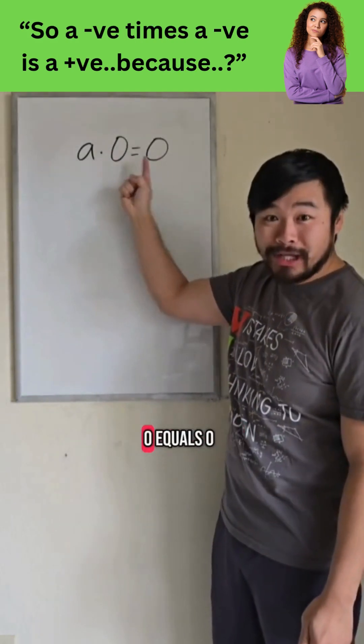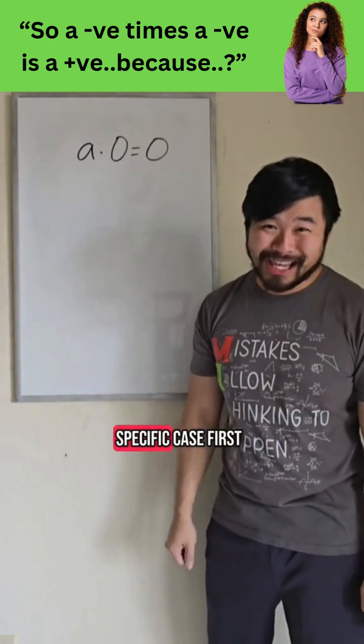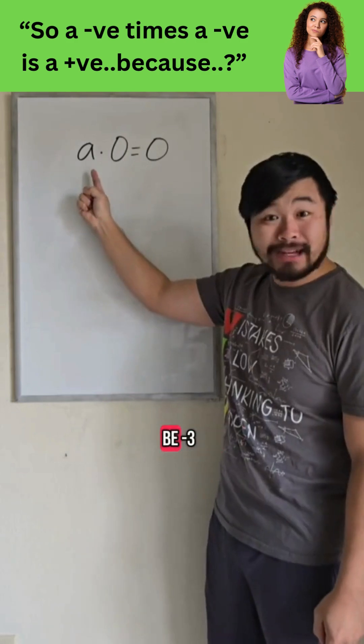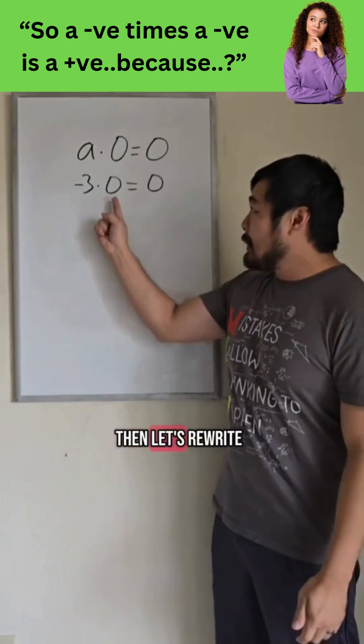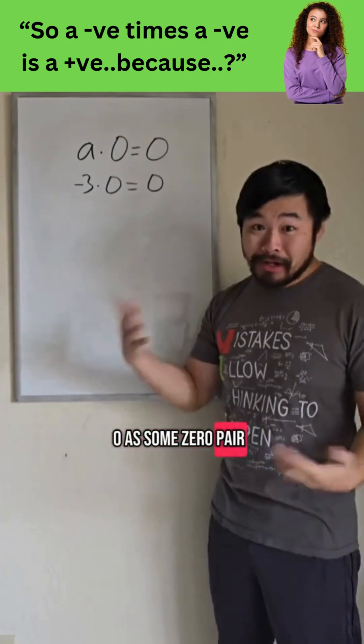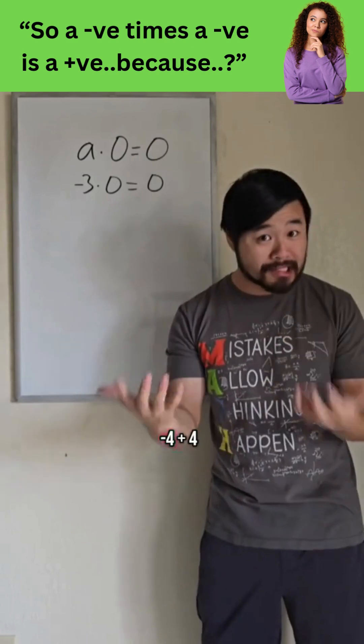We have any number times 0 equals 0. Let's do a specific case first. Let's have a be negative 3. Then let's rewrite 0 as some 0 pair, for example, like negative 4 plus 4.